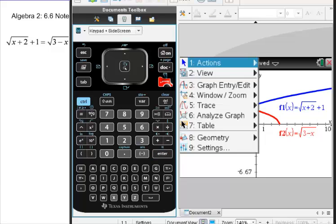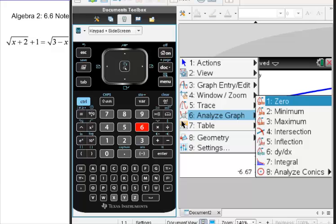So to find that point, hit the menu key, and choose to analyze the graph, and choose to find the intersection.